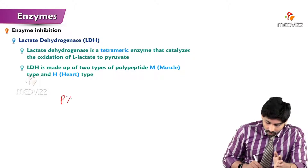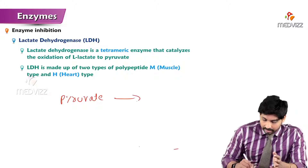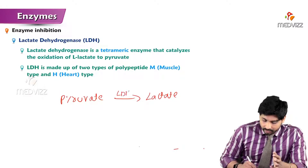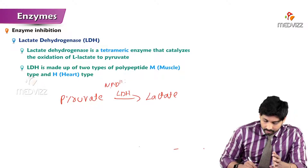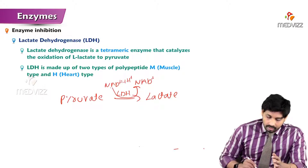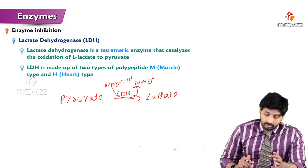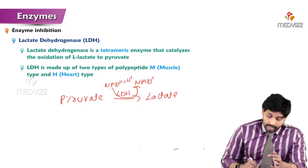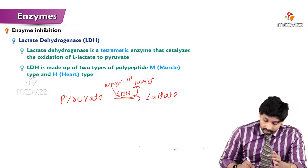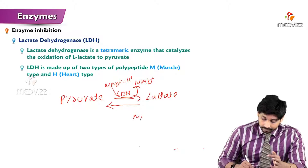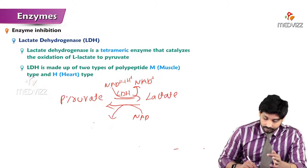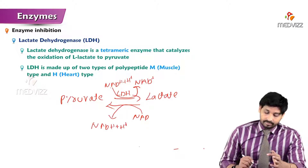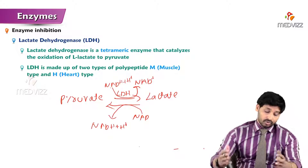LDH catalyzes the reaction where pyruvate - the end product of glycolysis - is converted to lactate. Here, NADH + H⁺ is converted to NAD⁺, meaning two hydrogens are donated to pyruvate to form lactate. This reaction is reversible: in the reverse direction, NAD⁺ is converted to NADH + H⁺.